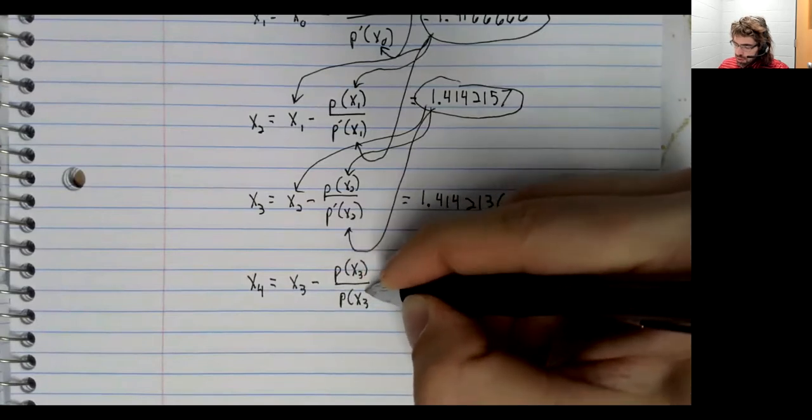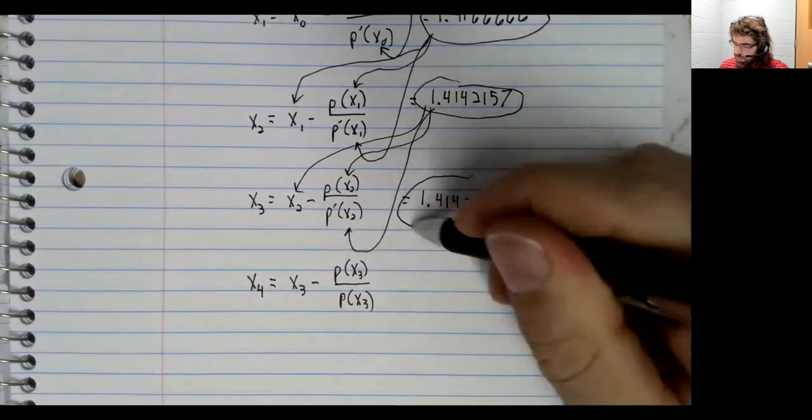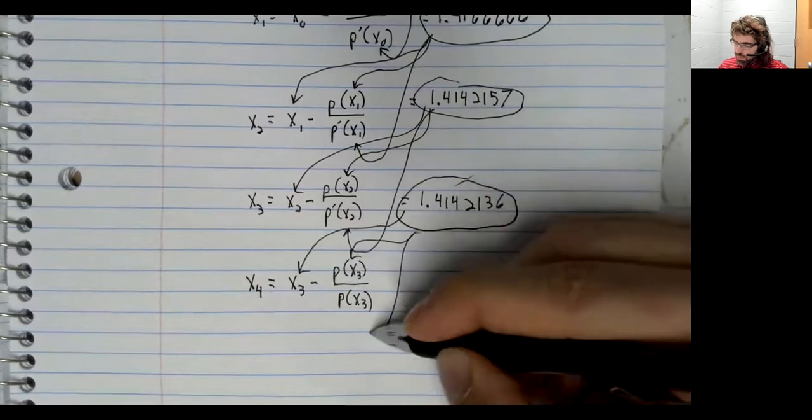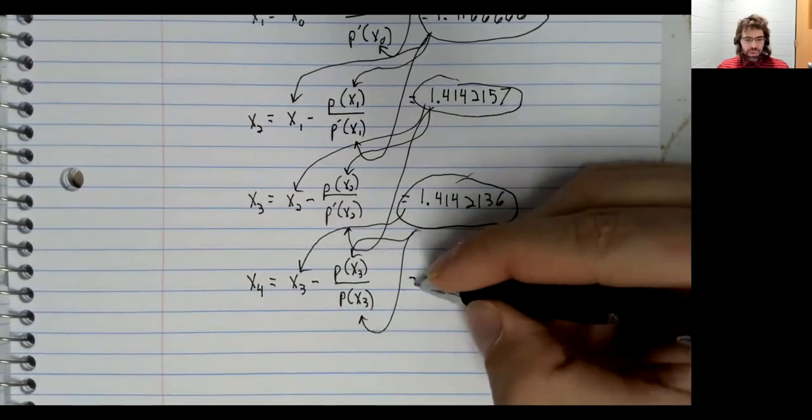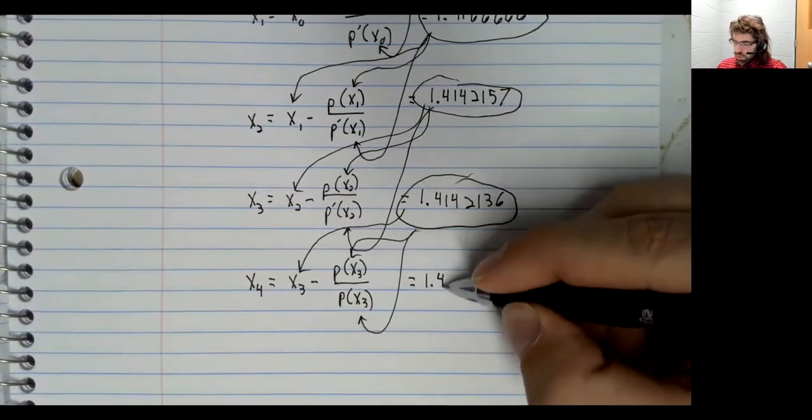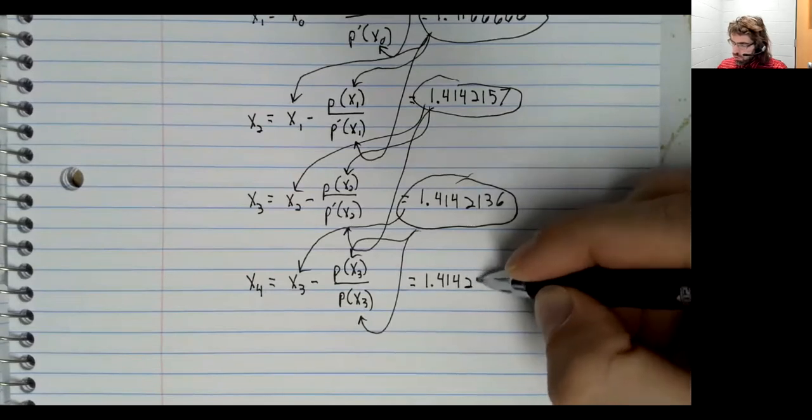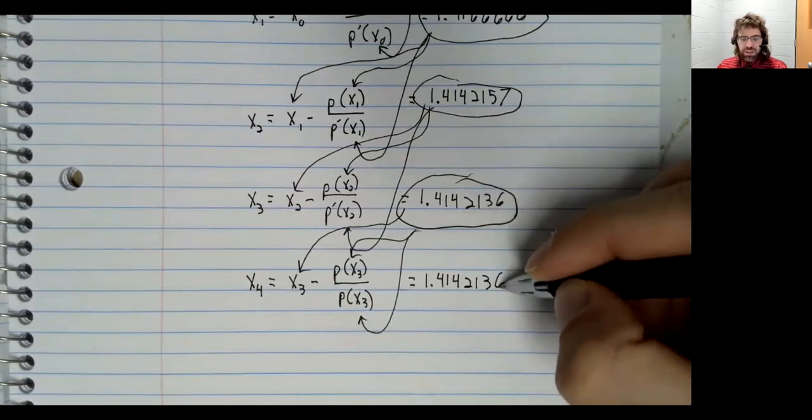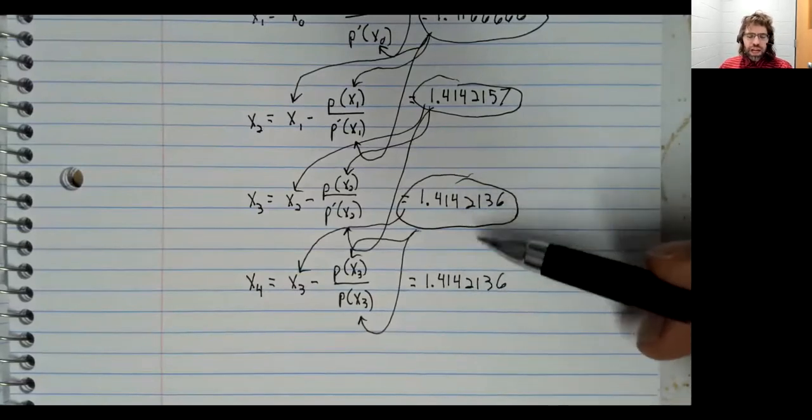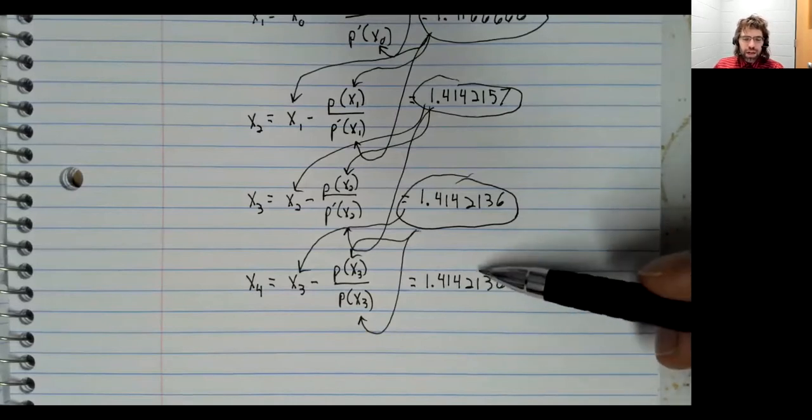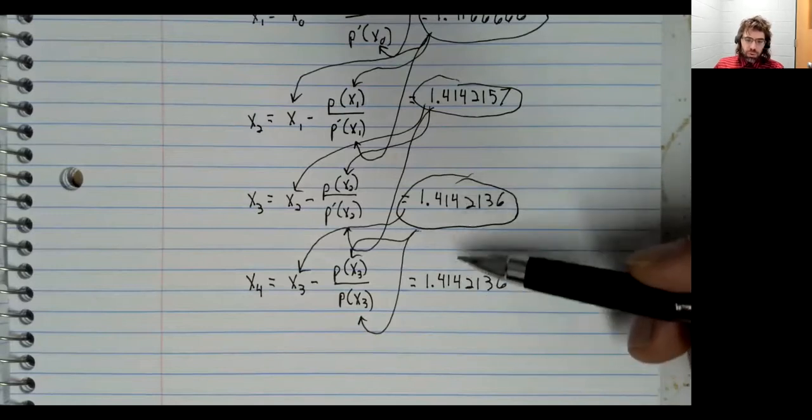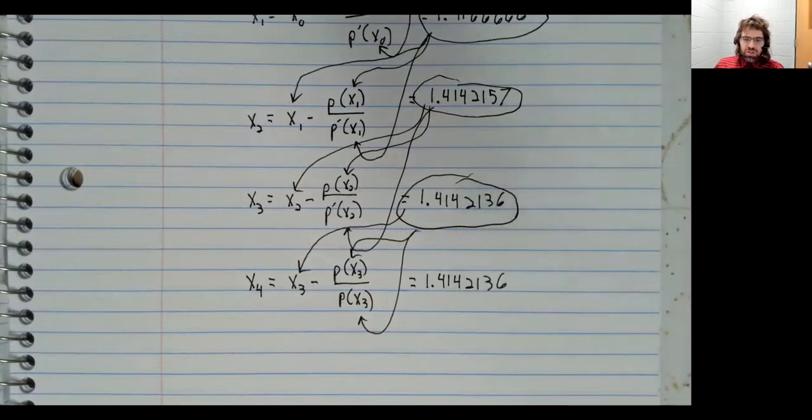When we plug this number in, what we get back is 1.4142136. Now, this number and this number aren't actually identical. I should clarify that I've been rounding. But up to seven decimal places, these are the same.